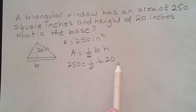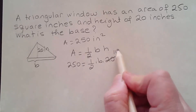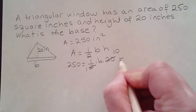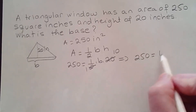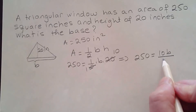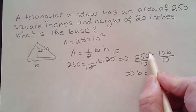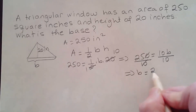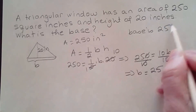I can go ahead and solve for b — that's the only variable left in the equation. I can simplify the 20 and the 2: 20 divided by 2 is 10, so you get 250 equals 10b. Now solving for b, I divide both sides by the coefficient of b, which is 10. That gives me b equals 250 divided by 10, which is 25. So to answer the question, the base is 25 inches.